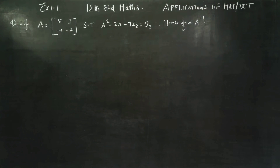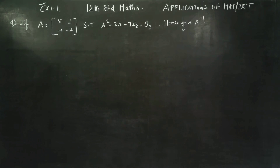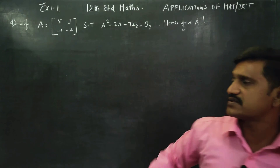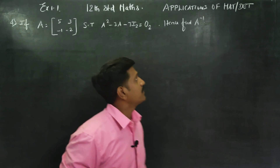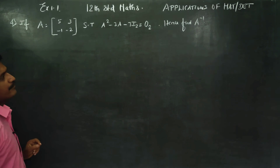Hello 12 standard students, I am Metro Karnagaran. In exercise number 1.1, sum number 4, a matrix is given and you have to show that A² - 3A - 7I₂ is equal to 0.